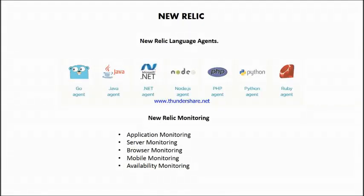Talking about New Relic language agents, they are available for Go, Java, .NET, Node.js, PHP, Python, and Ruby, among others. I am going to use the PHP agent to explain how to get started with New Relic. But before that, let us take a look at the different levels of monitoring that New Relic provides.